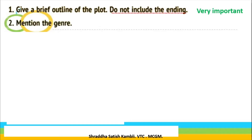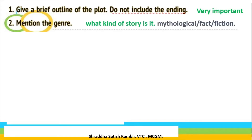Coming to the next point — mention the genre of the book. That is whether it is a thriller, whether it is a mystery, whether there is a love story, whether that book is about history or about war. So what kind of book is it, what kind of topic is covered in the book. You will tell the reader whether it is mythology, whether it is fact, whether it is fiction. Some novels are based on fiction also. This is a very important thing to tell the reader what kind of genre the book belongs to — that is what category the book belongs to.